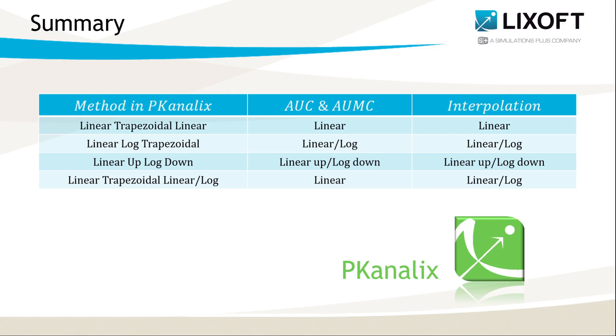So, to sum up, in PK Analytics, you can select one of the four integral methods. The first three options displayed in the menu in the interface use the same method for calculation of the AUC and for the interpolation: linear, linear before Cmax and logarithmic after, or linear for increasing or stable concentration and logarithmic for decreasing concentration. The last option uses the linear method for the AUC and combination of linear and logarithmic to interpolate points before and after Tmax respectively.